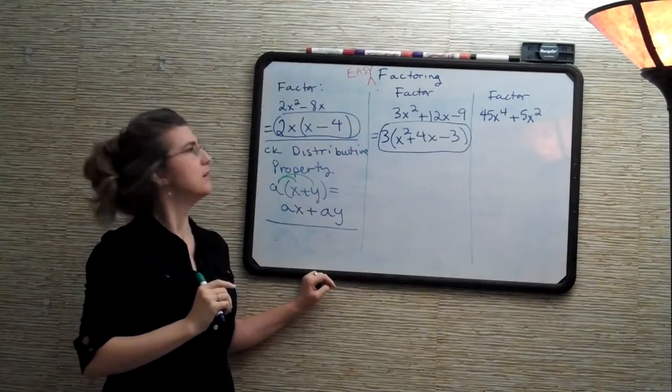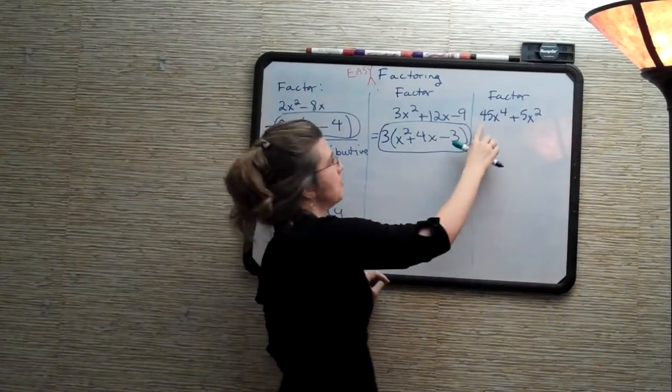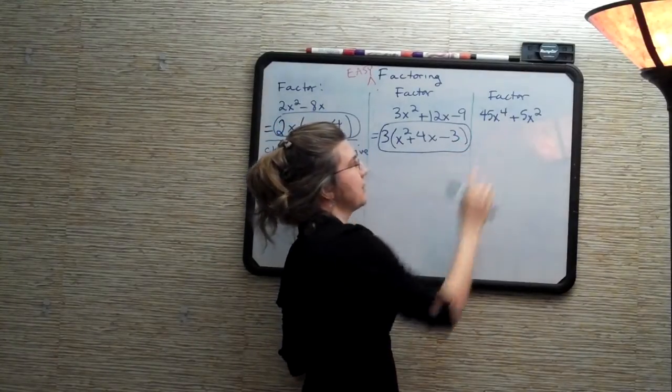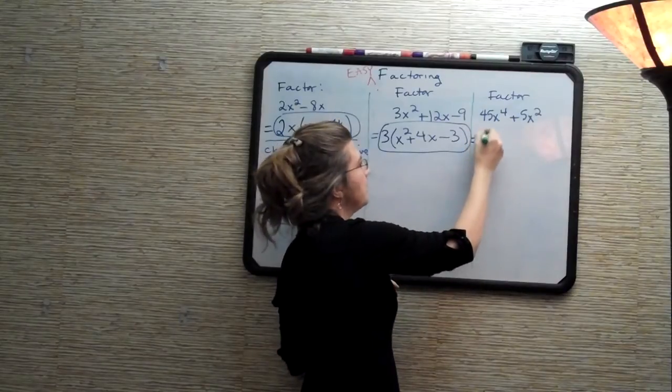Let's look at the third one. The easy factoring. So what's the biggest number that, the greatest common factor, what's the biggest number that divides evenly into 45 and 5? Well, that would be 5.